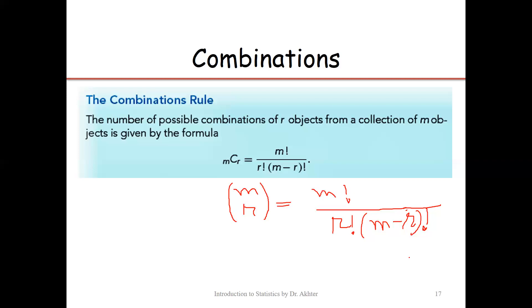In permutation, order matters — A then B is a different permutation from B then A. For example, two students A and B can sit in two seats in two ways: AB or BA. But if we are simply choosing two students, there is only one combination: {A, B}. In permutation the order matters; in combination the order does not matter — these are selections.